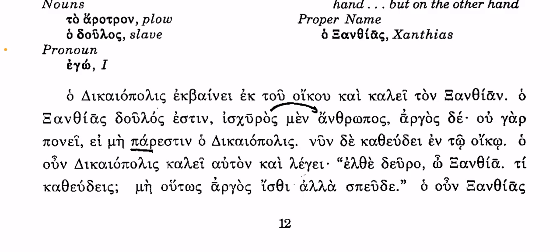Moving on to the fourth line — the 'O' is at the very end there, that is important. 'O un Diciopolis kalei afton ke legei.' So 'O un' means 'therefore,' and therefore Diciopolis — our friend here — calls out, calls him and says: 'Elthe deuro O Xanthias' — come hither, O Xanthias.